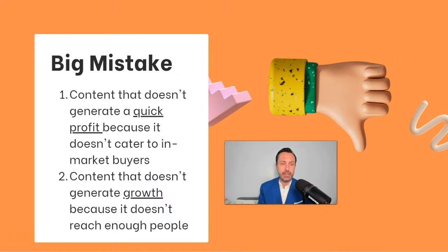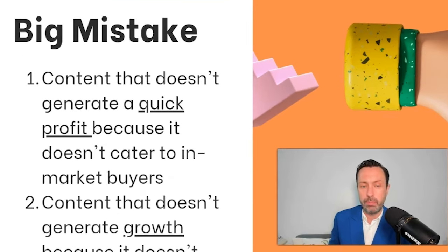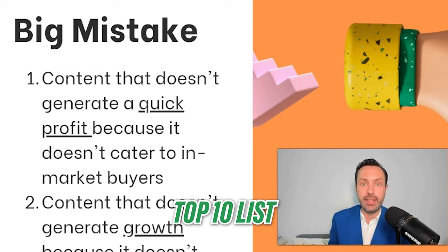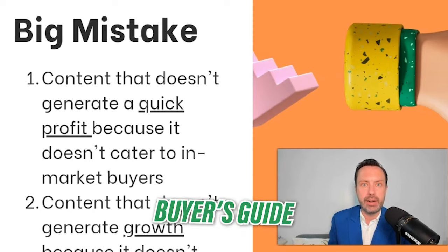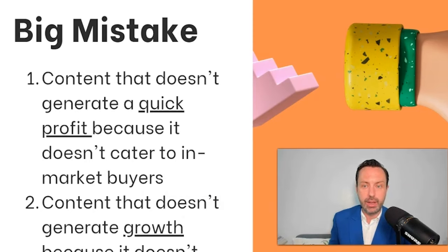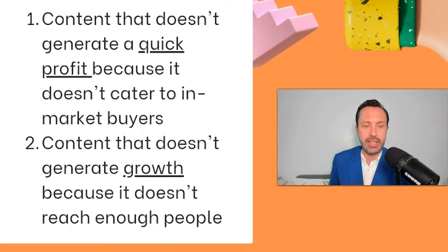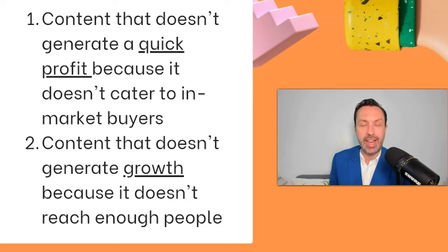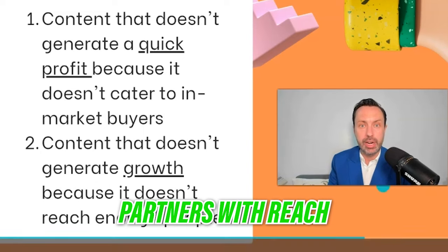There's a common mistake people make with digital marketing. The first is they create content that doesn't generate a quick profit because it doesn't resonate with in-market buyers. Content that resonates with in-market buyers includes things like a top-10 list of the best website designers, or a buyer's guide to B2B SaaS CRM software — content that quickly segues into a conversation generating sales pipeline. The second big mistake is creating content that doesn't generate growth because it simply doesn't reach enough people. The answer is to create just a few very important key content assets and distribute them widely through reach advertising and partners that already have a lot of reach.